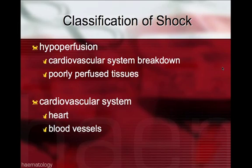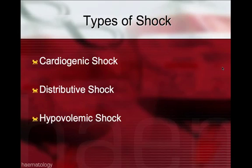If hypoperfusion is a cardiovascular system breakdown resulting in poorly perfused tissues, the types of shock can be defined based on where exactly the problem is within the cardiovascular system — either with the heart itself, the blood vessels, or what the blood vessels carry. The types of shock we'll briefly talk about are cardiogenic shock, distributive shock, and hypovolemic shock.